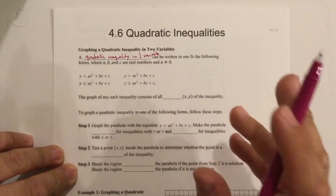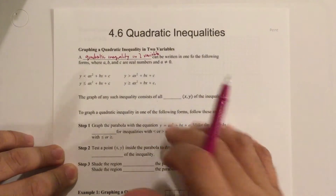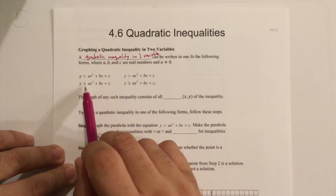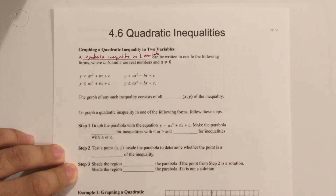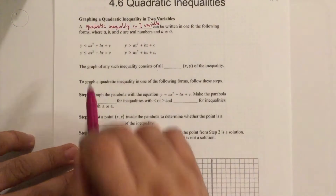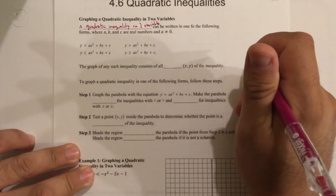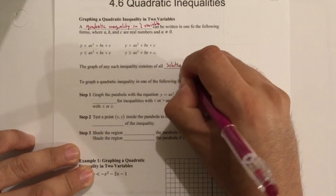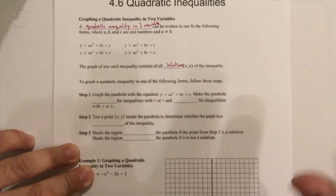Some parabolas are going to be facing up, some are going to be facing down. Some are solid, some are dashed, and that's dictated by your inequality sign. The shading is going to depend on when we test the point. The graph of any such inequality consists of all solutions — the X, Y of the inequality — so all of the shaded region.